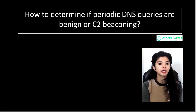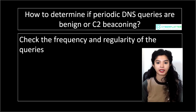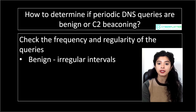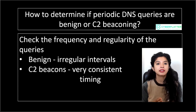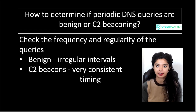How do you determine if periodic DNS queries are benign or C2 beaconing? The first step is to check the frequency and regularity of the queries. Benign processes like software updates or telemetry usually query at irregular intervals or on predictable schedules like hourly or daily. C2 beacons often have very consistent timing — such as every 10 seconds, every minute, or every 5 minutes. Highly regular timing is a big red flag.